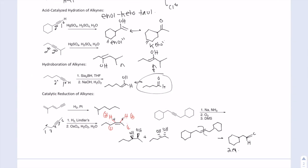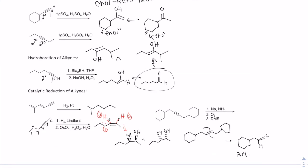That pretty much sums up Chapter 7. Remember, Chapters 6 and 7 are the only material on Exam 3, so make sure you get all these mechanisms and product predictions down and you're going to be golden for synthesis. Good luck!